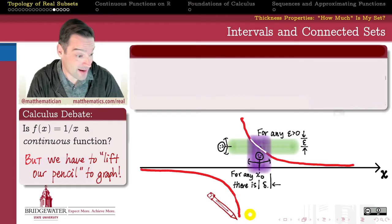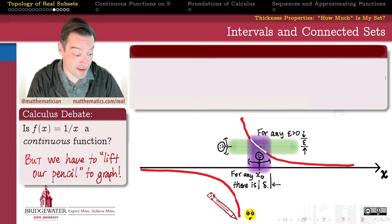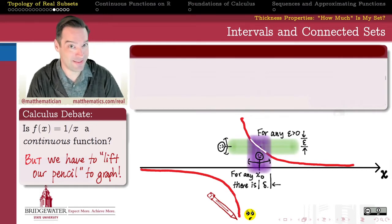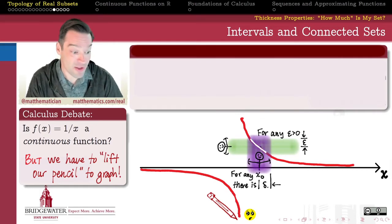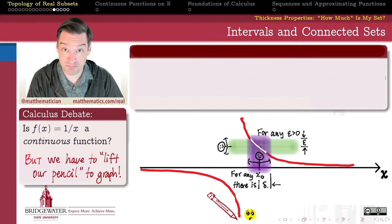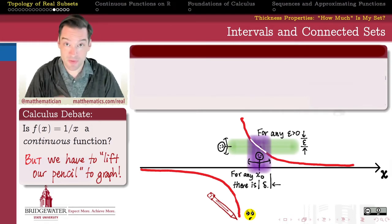Because we've been taught that continuity means not having to lift our pencil. Well, just like love means never having to say you're sorry, it's a little bit of a white lie, right? We do have to lift our pencil to graph this function in its entirety. There's no way around that. But what is the reason that we have to lift our pencil?